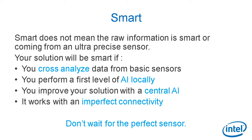It has to be smart. Smart does not mean the raw information from the sensor is perfect, or that you have an ultra-precise sensor. Your solution will be smart if you cross-analyze data from different basic sensors, each being imperfect. You can perform a first level of analysis with artificial intelligence locally on the recording platform, then improve your solution with a central level of data analysis and AI. The entire solution has to work with imperfect connectivity on low bandwidth if you want to scale. So don't wait for the perfect sensor — it will never happen.